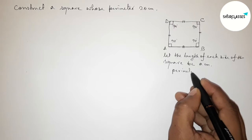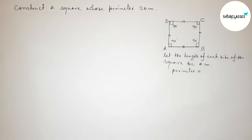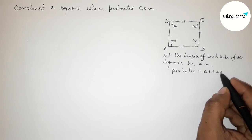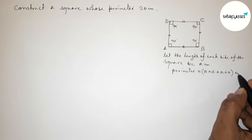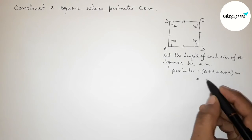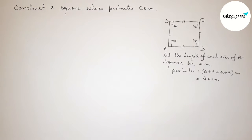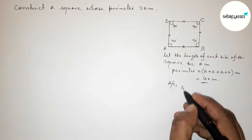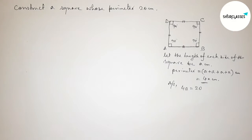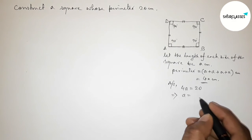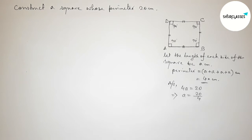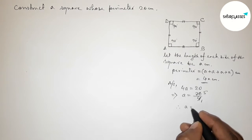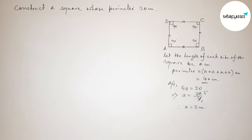Finding the perimeter of this square: perimeter equals the sum of four sides, so a + a + a + a = 4a centimeters. According to the condition, 4a equals 20. This implies a equals 20 divided by 4, which gives a equals 5 centimeters.